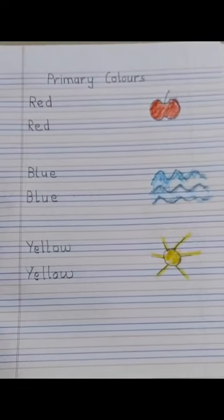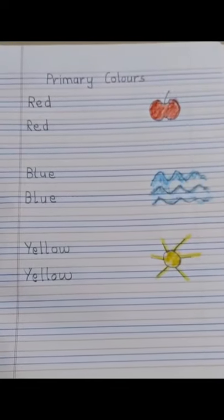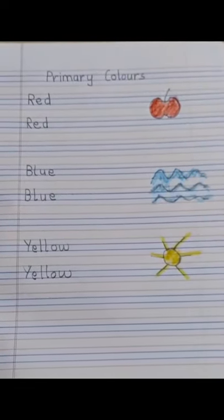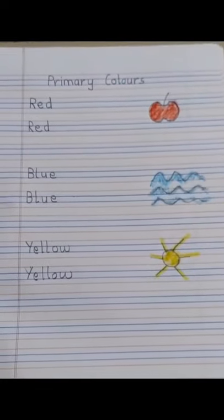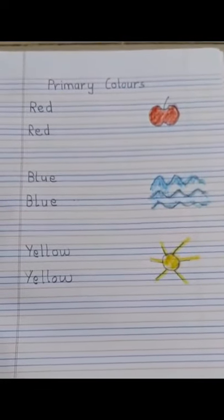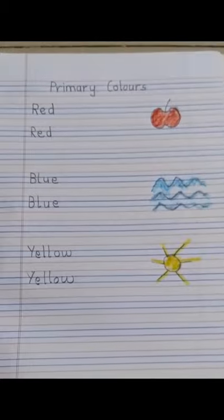So now can you see the three primary colors? What are they? Red, blue and yellow. Once more: red, blue and yellow.